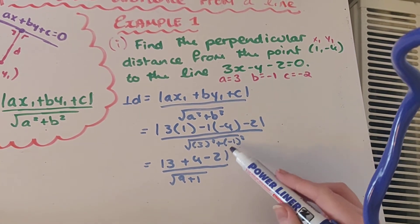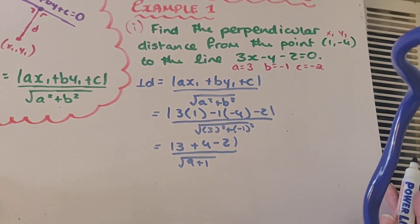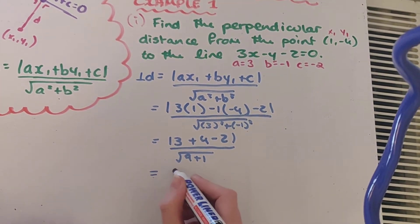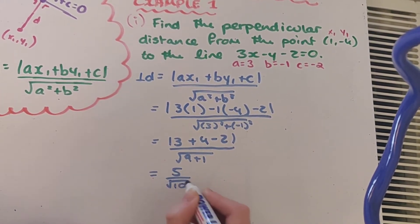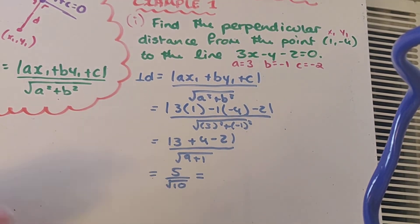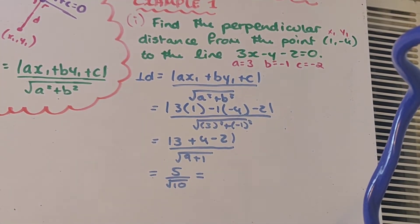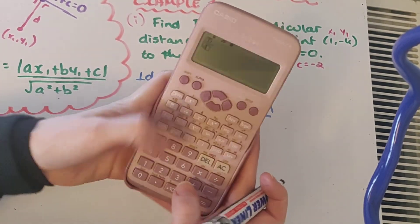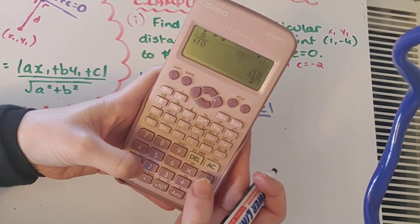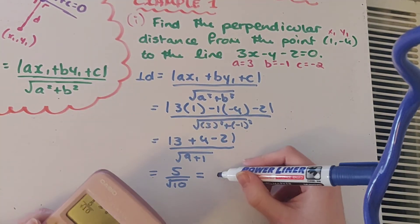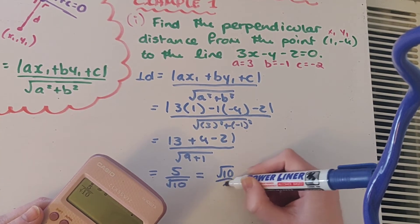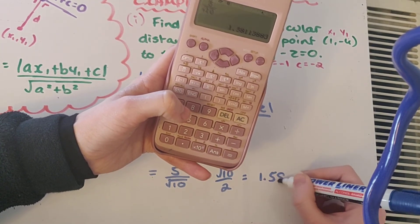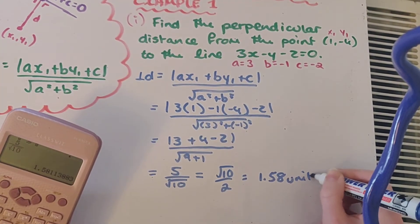Because 3 squared is 9 and minus 1 squared is 1. Which means we have 3 plus 4 which is 7, minus 2 is 5. So we have 5 over the square root of 10, which we're going to put into our calculator to get our answer in its simplest form. So 5 over the square root of 10 gives me root 10 over 2, which to 2 decimal places is 1.58 units as our distance.